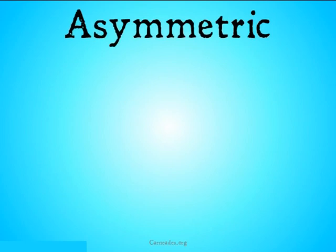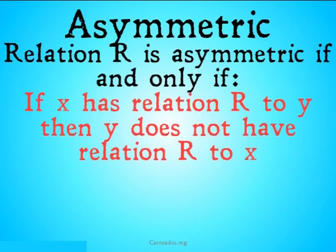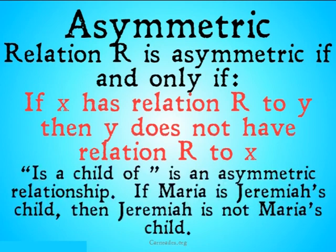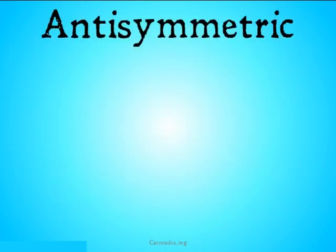We also have asymmetric. Relation R is asymmetric if and only if: if X has relation R to Y, then Y does not have relation R to X — it must not have that relation to X. 'Is the child of' is going to be an asymmetric relationship, because if Maria is Jeremiah's child, then Jeremiah cannot be the child of Maria. If the relationship is had in one direction, it cannot be had in the other.